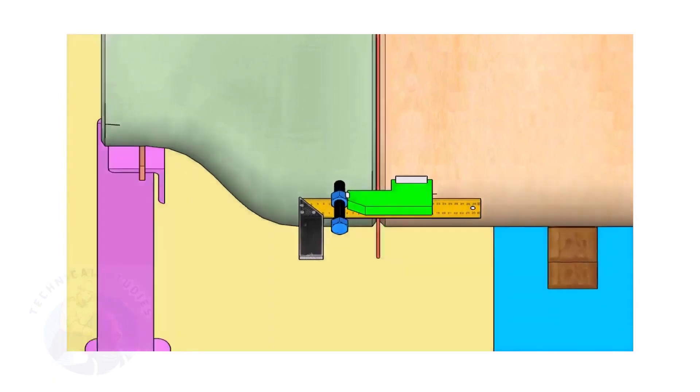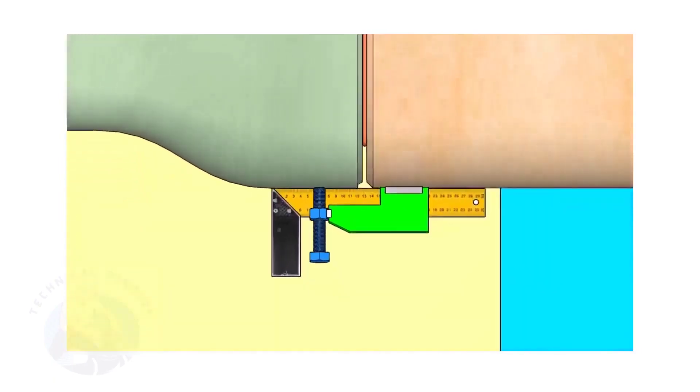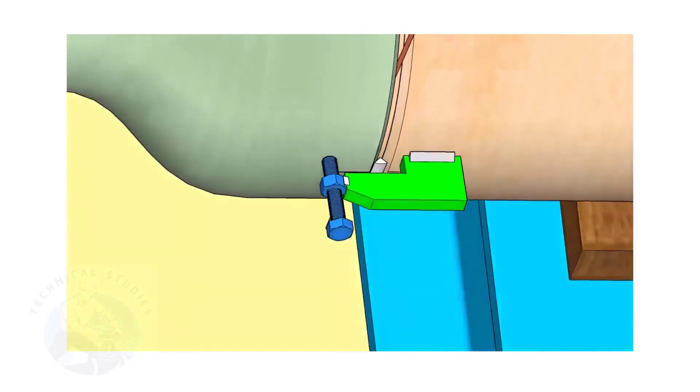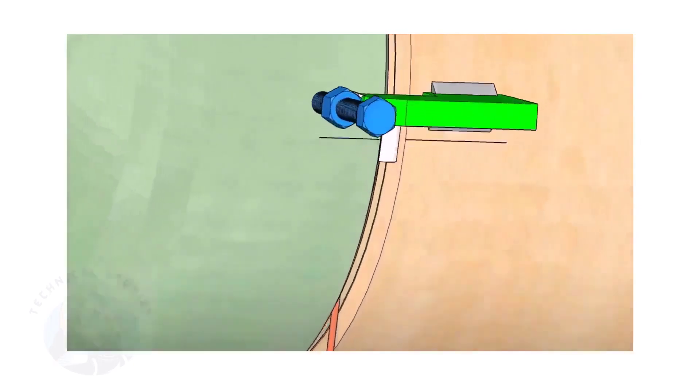Correct the straightness of the joint on both sides. If required, remove the gap rod. Tack weld on both sides.